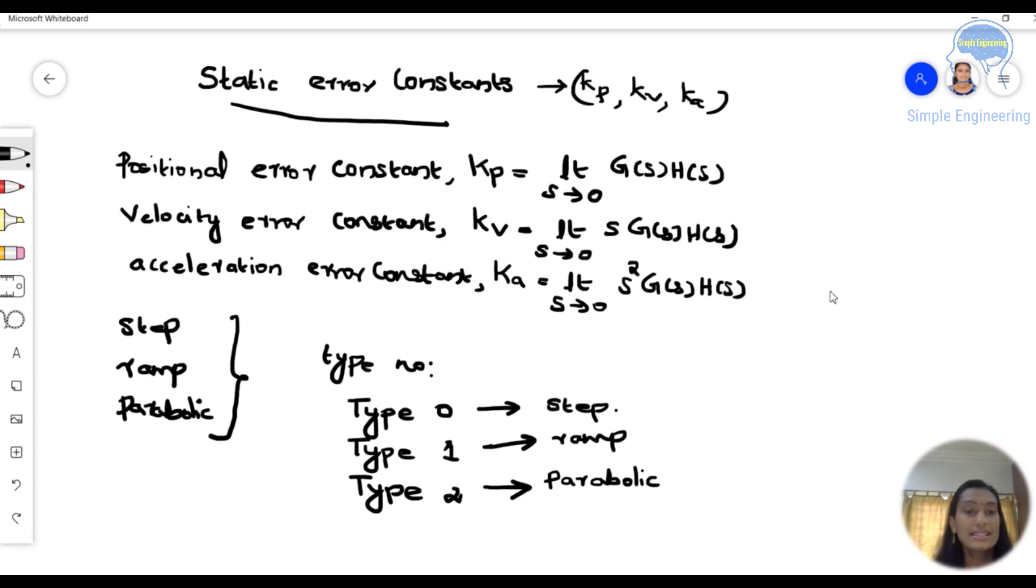So this steady state error, when the input is unit step, that is called positional error constant. And if we take ramp signal it is velocity error constant, and if we consider a parabolic signal we will get acceleration error constant.